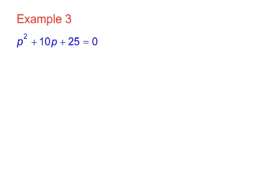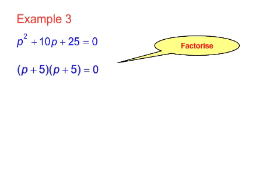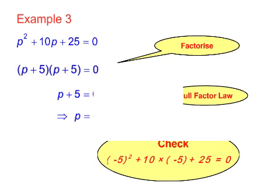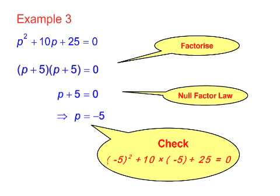Let's look at another trinomial: p² plus 10p plus 25 equals 0. This will factorise into p plus 5, p plus 5. Notice it's a perfect square. And thus, using the null factor law, we have just one p plus 5 equals 0, from which p equals minus 5. Again, do the check to make sure the left-hand side of the original equation equals the right-hand side, which is 0.